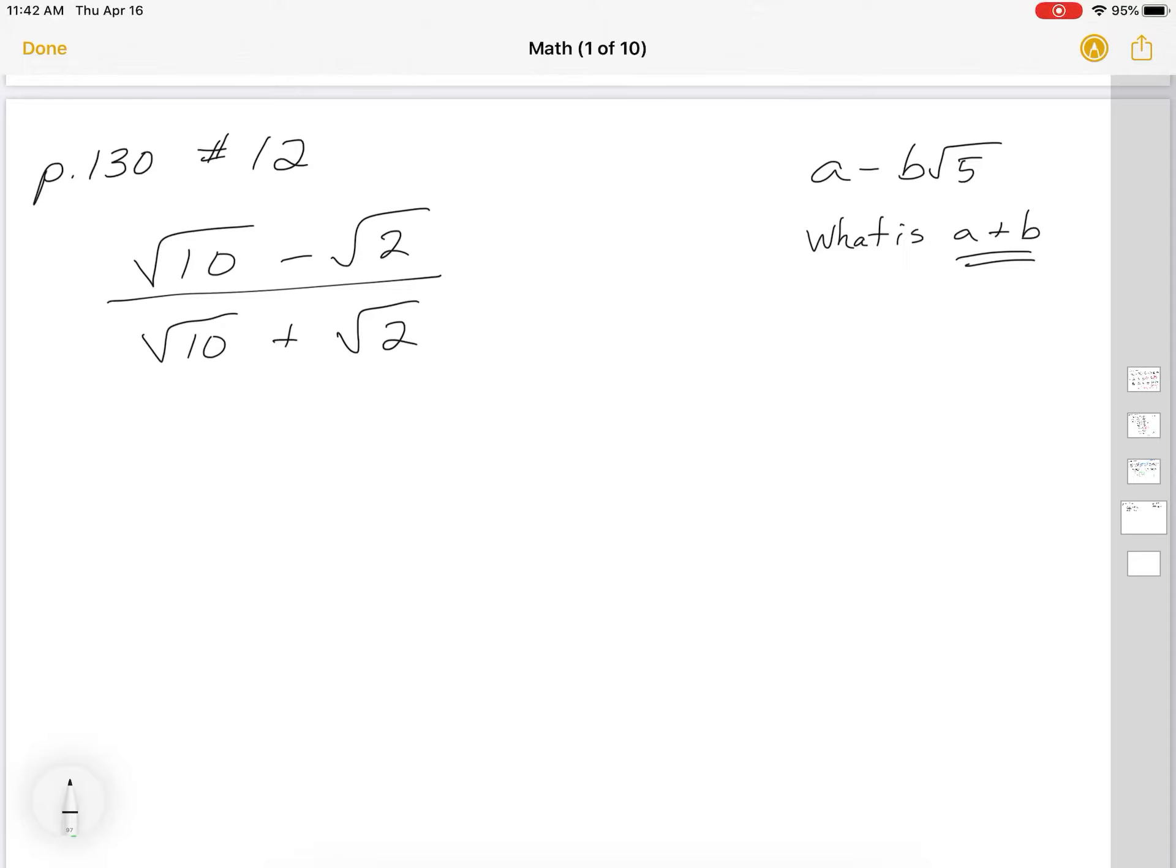So we have root 10 minus root 2 over root 10 plus root 2, and we want to express it in the form. It says that the answer can be expressed in the form A minus B root 5, and they want you to write what is A plus B. So let's just first focus on solving this.